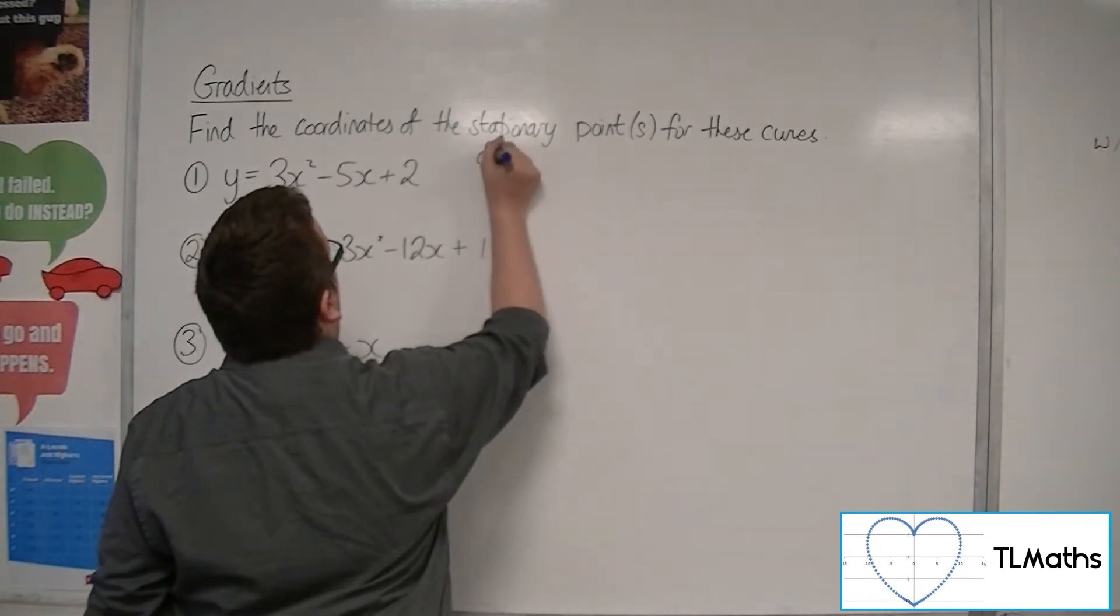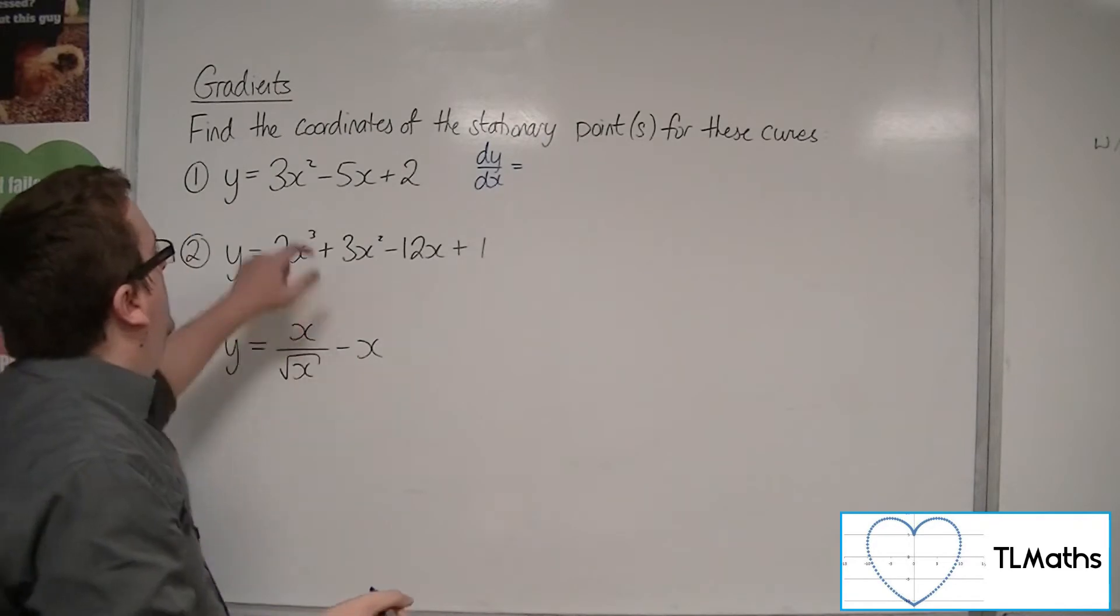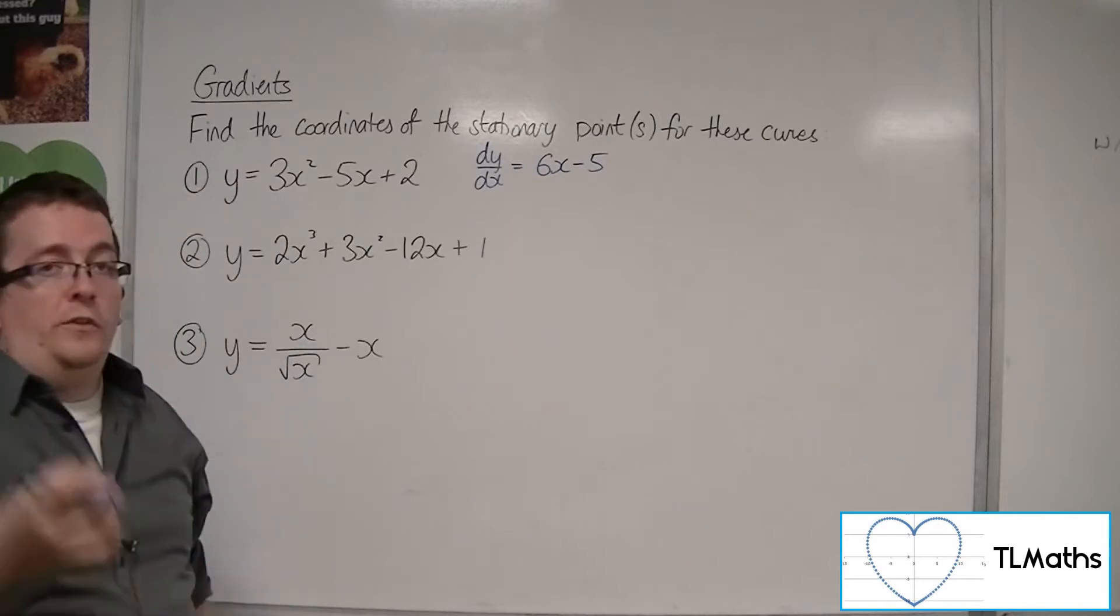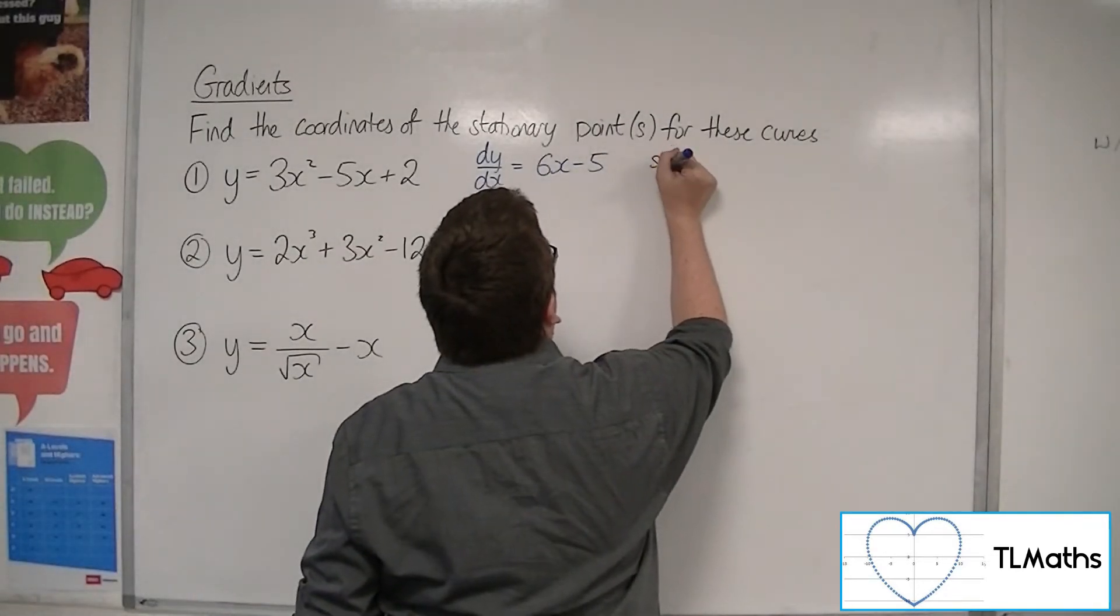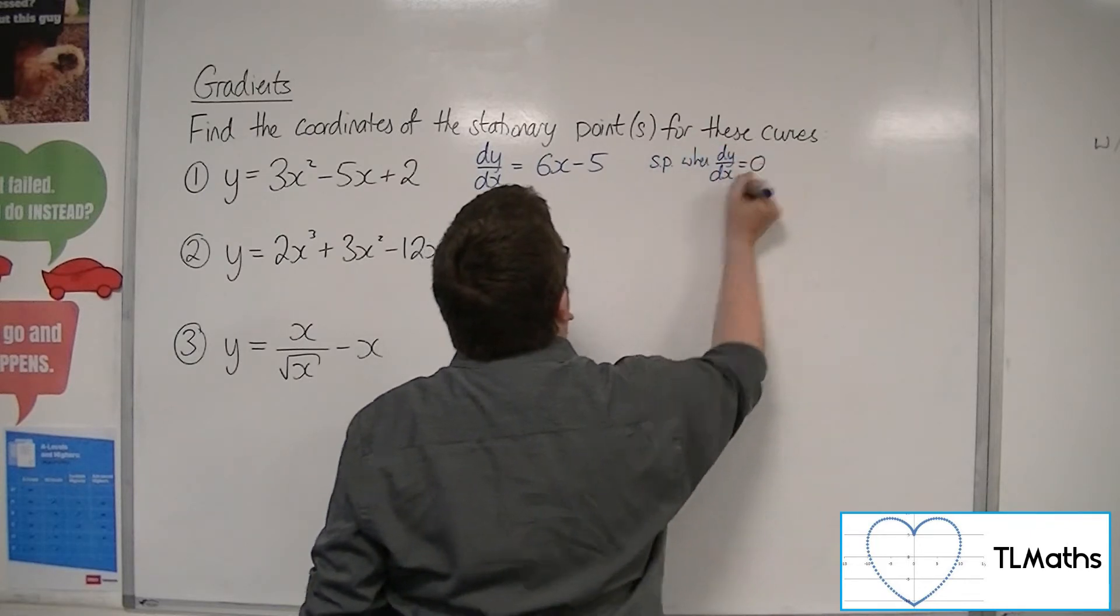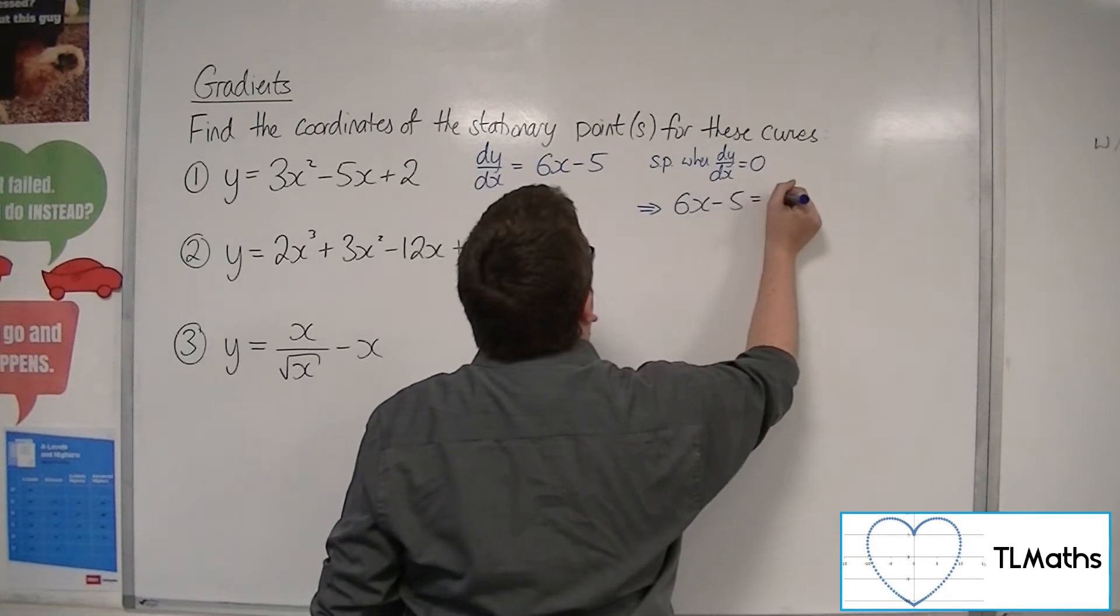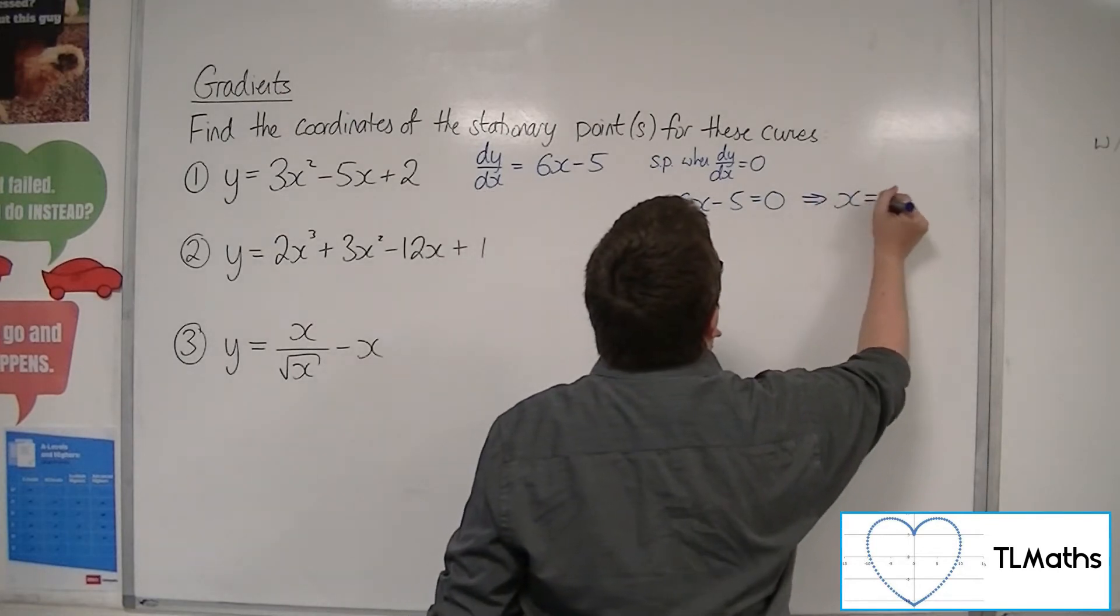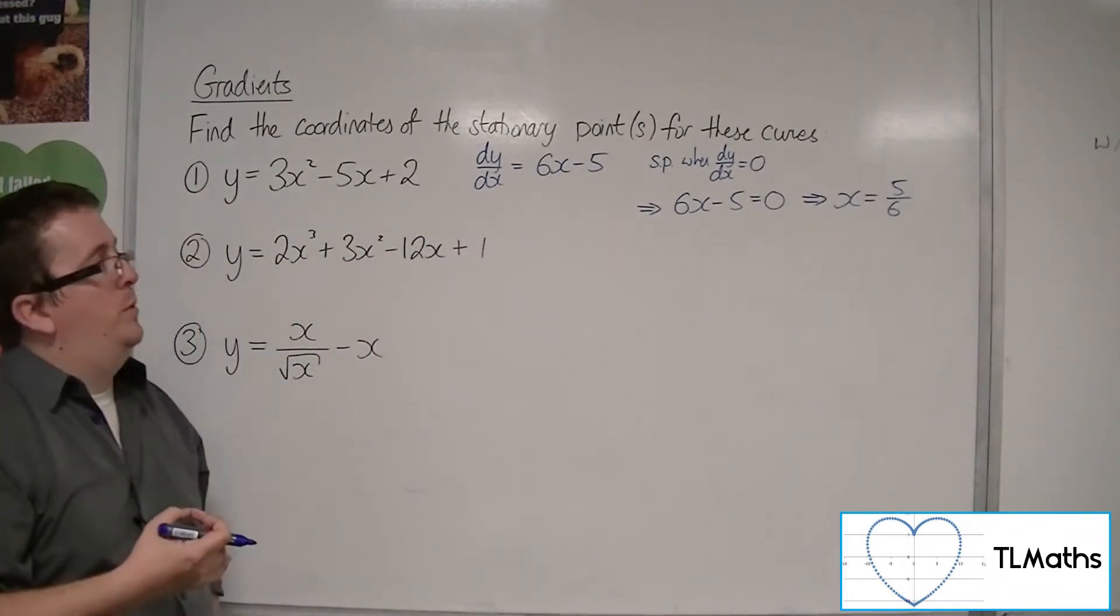So for this first one, first of all, find dy/dx. So I'm going to get 6x minus 5. The stationary points exist when dy/dx is 0. So 6x minus 5 will have to be equal to 0. Add the 5 to both sides, divide both sides by 6, and so I have an x-coordinate of a stationary point, 5 sixths.